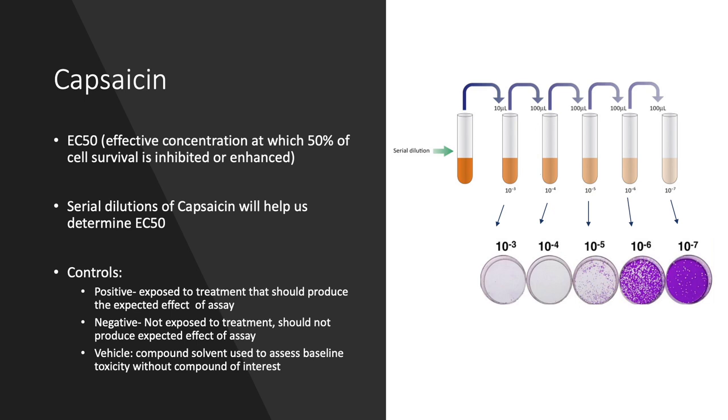Our positive control is plumbagin. Plumbagin is a compound that exhibits anti-cancer activity in various human cancers and is therefore expected to demonstrate toxicity in our cancer cell line.